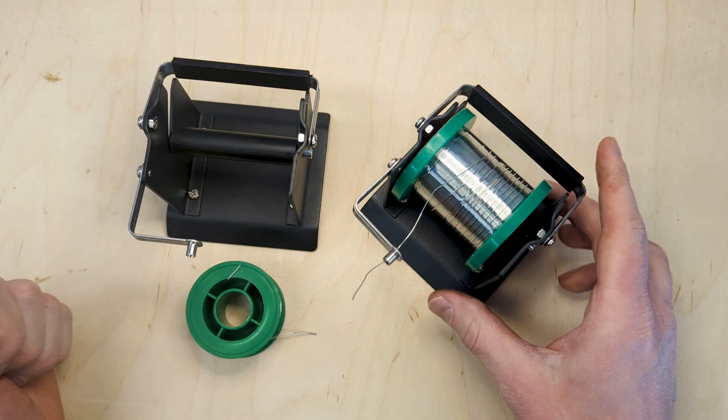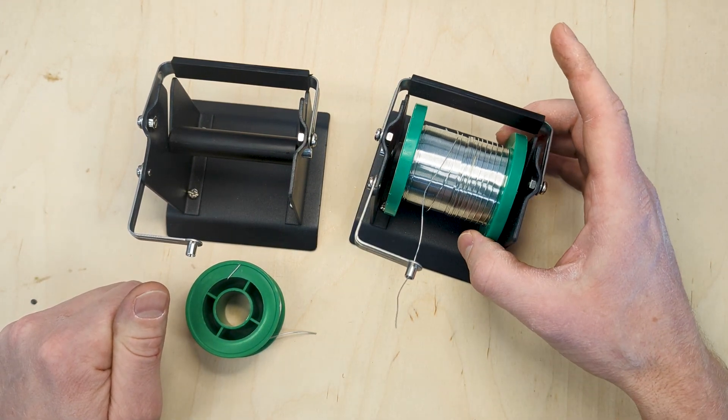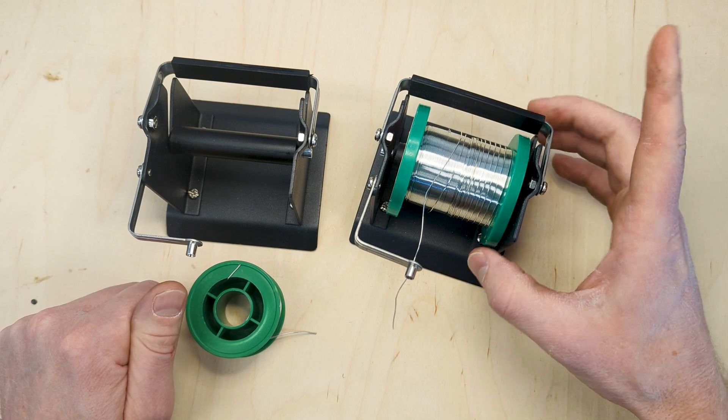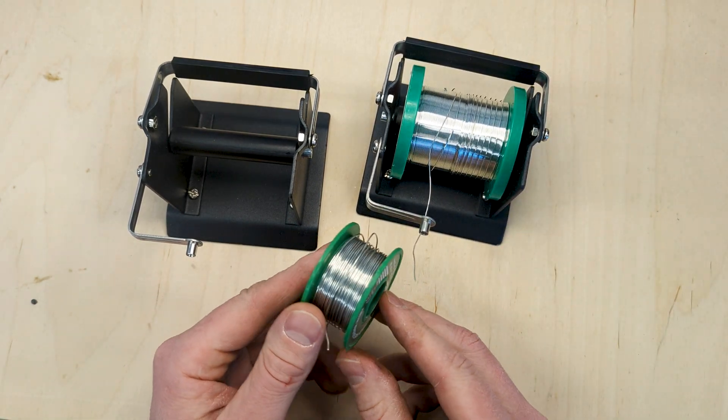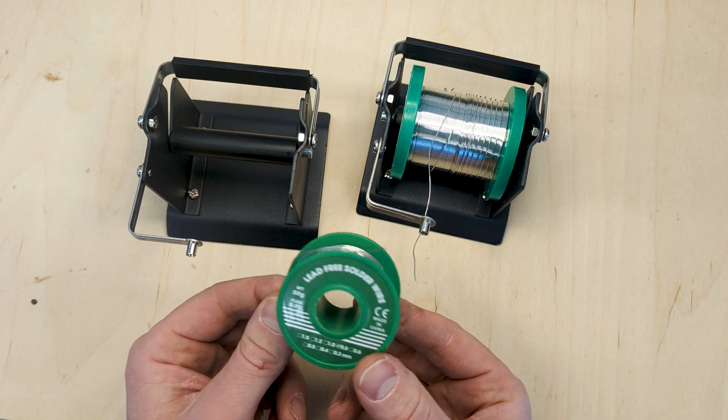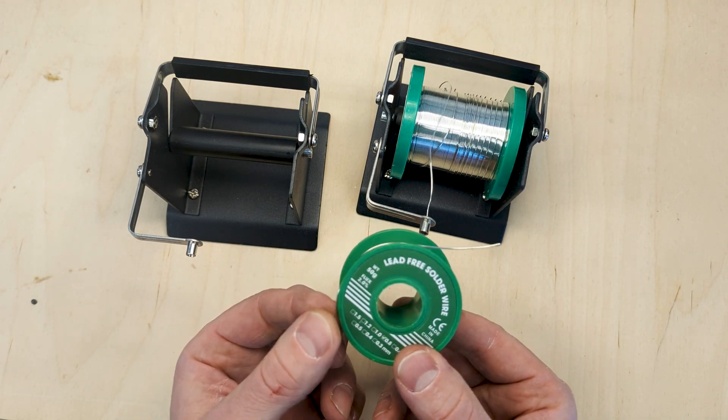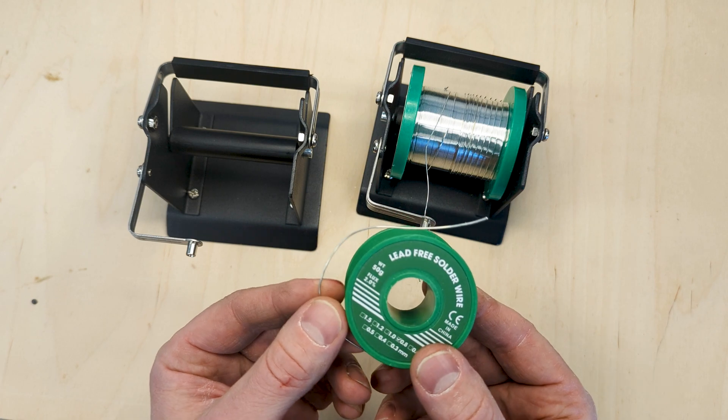But how do we load a solder spool with new solder? Here we have an example of a wider spool that the dispenser is designed for, but many times you may have solder in different size spools because you have different thicknesses. So how can we load this onto the spool?